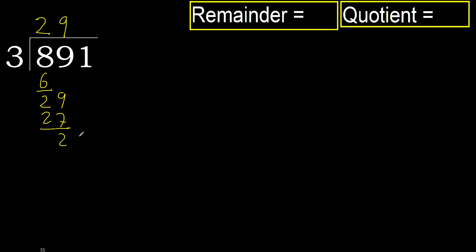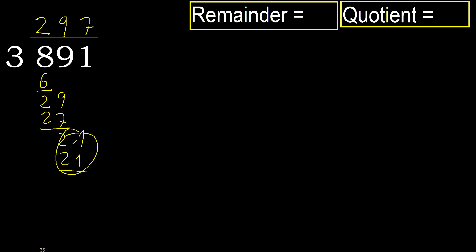Next: bring down 1, making 21. 3 multiplied by 7 is 21, which is not greater. Subtract.